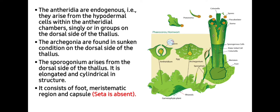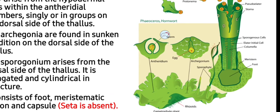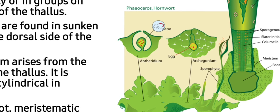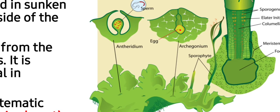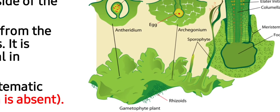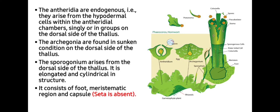The antheridia are endogenous, meaning they arise from the hypodermal cell within the antheridial chamber. They may occur singly or in groups on the dorsal side of the thallus, as you can see in these images. The archegonia are also found in a sunken condition on the dorsal side of the thallus.